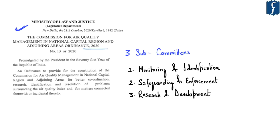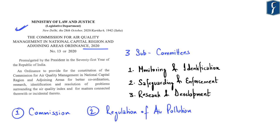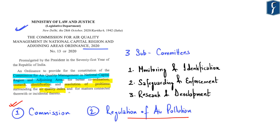The main aim of this ordinance is to set up a commission which provides for regulation of air pollution. The ordinance highlights that it aims to provide for the constitution of the Commission for Air Quality Management in NCR and adjoining areas for better coordination, research, identification and resolution of problems surrounding the air quality index, and also for related matters.